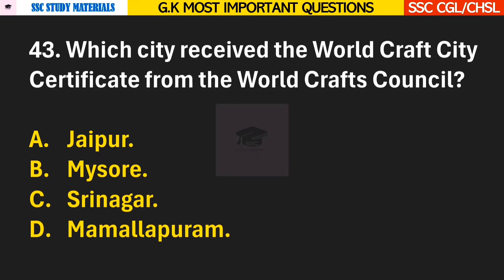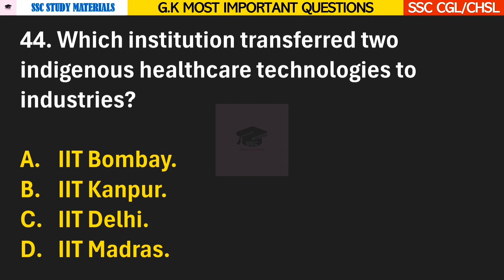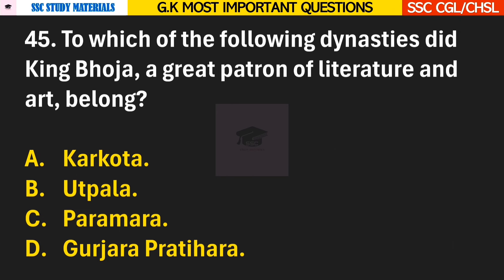Question 43: Which city received the World Craft City Certificate from the World Crafts Council? Answer C — Srinagar. Question 44: Which institution transferred two indigenous healthcare technologies to industries? Answer C — IIT Delhi. Question 45: To which of the following dynasties did King Bhoja, a great patron of literature and art, belong? Answer C — Paramara.